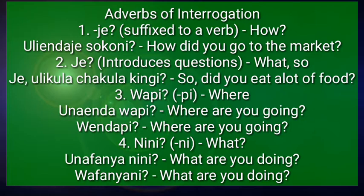Adverbs of interrogation: we have the suffix '-je'. If you want to know more about suffixes, infixes, and prefixes, use the video in the suggestion above. '-Je' as a suffix means 'how.' Example: 'ulienda je sokoni?' — how did you go to the market? 'Ulienda' means 'you went,' and when you add '-je,' it becomes a question: 'ulienda je.' And 'je' is from 'aje.'